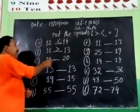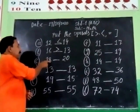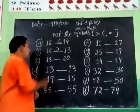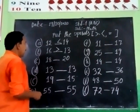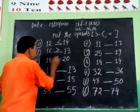Number C: 18 and 20. 18 is less, 20 is greater. The sign is less.